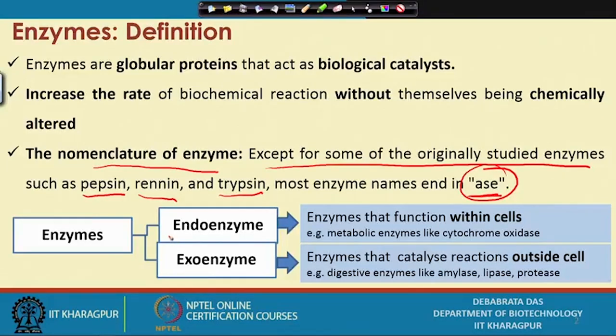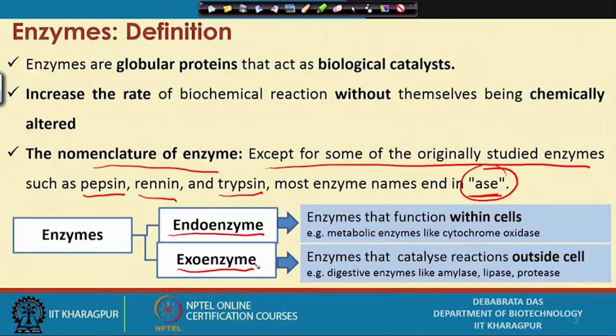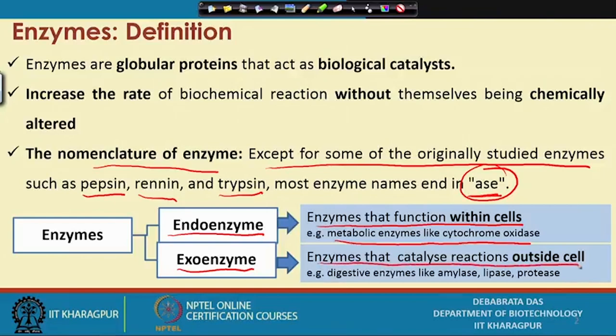Enzymes may be of two types: endoenzymes and exoenzymes. Endoenzymes work within the cells — for example, the many enzymes participating in metabolic pathways such as cytochrome oxidase and phosphofructokinase of the glycolytic pathway. Exoenzymes are basically hydrolytic enzymes. The organism produces them and they come out of the cells, interact with the substrate, and the substrate undergoes hydrolysis to give the product. Examples include amylase, lipase, and protease.